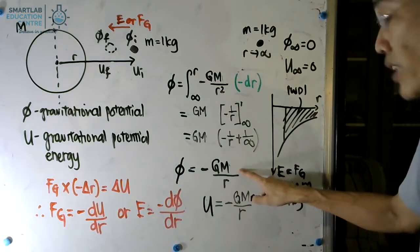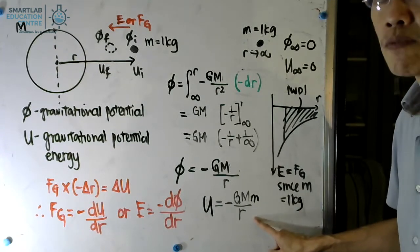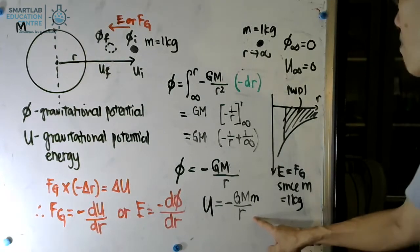This is the formula that you use for gravitational potential. And if you multiply by the small m, that will be the formula for gravitational potential energy.